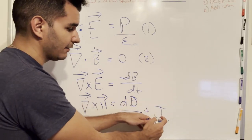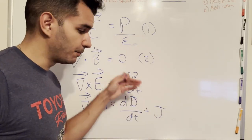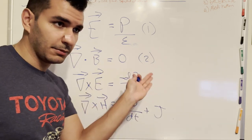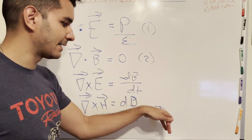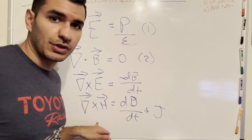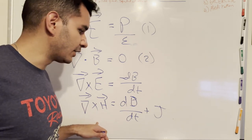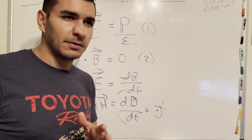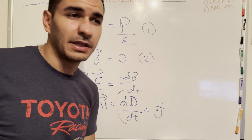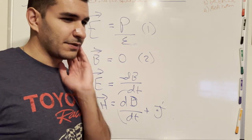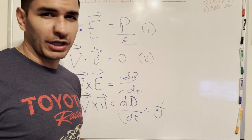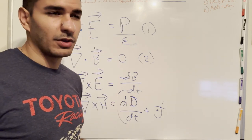And likewise, if we have current — a bunch of charges going steadily through a wire, a static current — that's also going to induce a magnetic field. So this is, to the best of my ability as of now, the way to explain these things. It is four in the morning and I can't sleep, so this is the best explanation I could come up with at four in the morning.